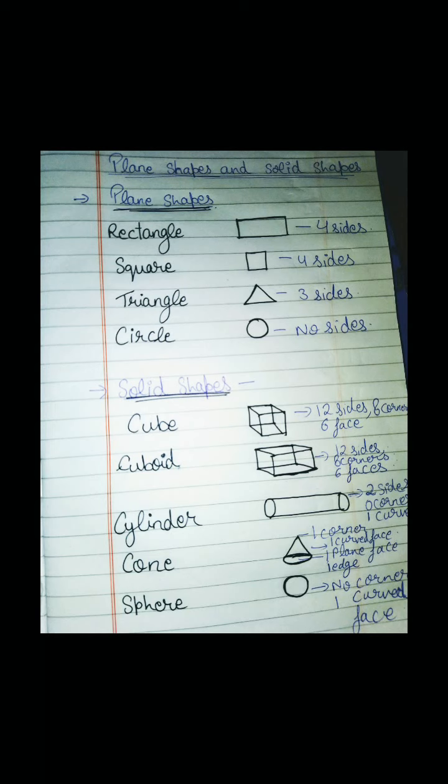A cube has 12 sides, 8 corners and 6 faces. Then cuboid - it has 12 sides, 8 corners and 6 faces.